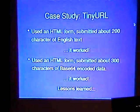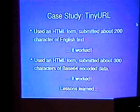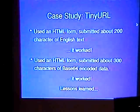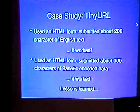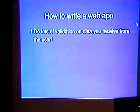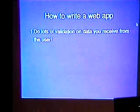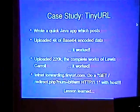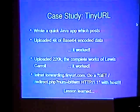I used an HTML form and basically submitted about 200 characters of English text — sure enough, it worked. Then I submitted 300 characters of base64-encoded data, random-looking gibberish stuff. Again, it worked. So I wrote a quick Java app to actually make an HTTP request for me, and I uploaded 4K of base64-encoded data. And it worked. So I uploaded the complete works of Lewis Carroll. And it works.